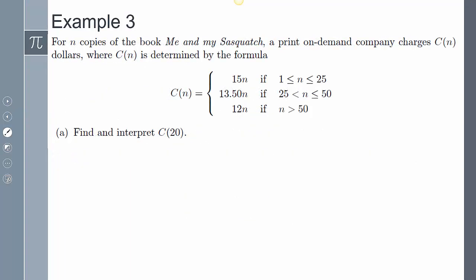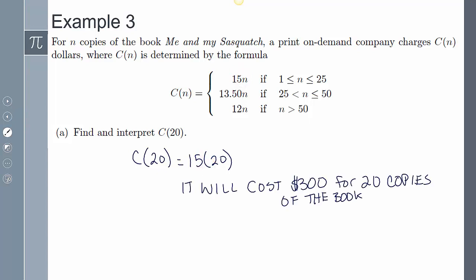Example number three says for n copies of the book Me and My Sasquatch, a print on demand company charges C(n) dollars where C(n) is determined by the formula. When n is between 1 and 25, use this function. When n is between 25 and 50, use this function. When n is greater than 50, use this function. So it says find and interpret C(20). So that's going to be this domain here. 20 is between 1 and 25. So I'm going to use this one. So C(20) equals 15 times 20. And so that's going to cost $300 for 20 copies of the book.